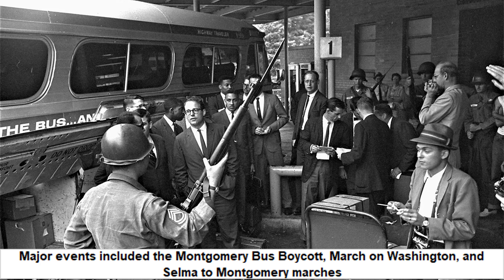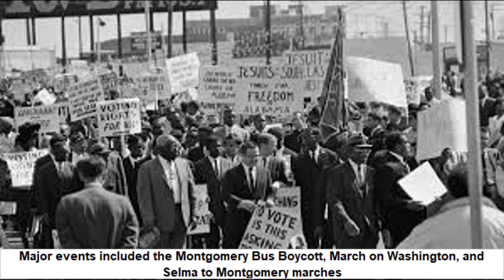Several major events defined the Civil Rights Movement. The Montgomery Bus Boycott of 1955–1956 successfully ended bus segregation in Montgomery, Alabama. The March on Washington for Jobs and Freedom in 1963, where Martin Luther King Jr. delivered his I Have a Dream speech, was a significant demonstration for racial and economic equality. The Selma to Montgomery marches in 1965 highlighted the struggle for voting rights and led to the passage of the Voting Rights Act.